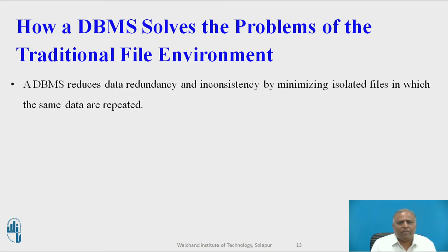The next topic is how DBMS solves the problems of the traditional file environment. A DBMS reduces data redundancy and inconsistency by minimizing isolated files in which the same data are repeated. The DBMS may not enable the organization to eliminate data redundancy entirely, but it can help control redundancy. Even if the organization maintains some redundant data, using a DBMS eliminates data inconsistency because the DBMS can help ensure that every occurrence of redundant data has the same values.